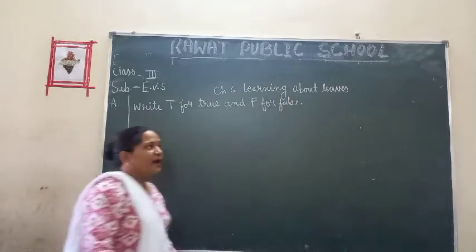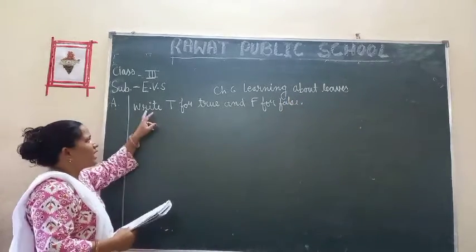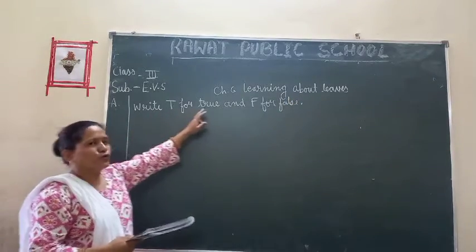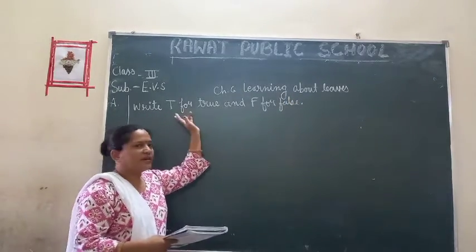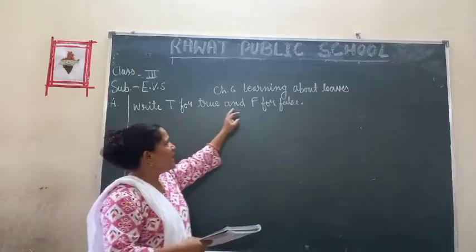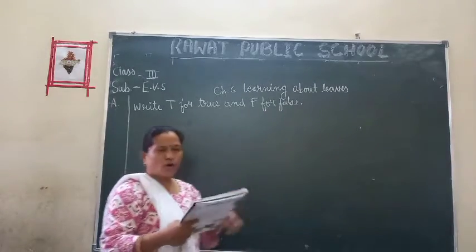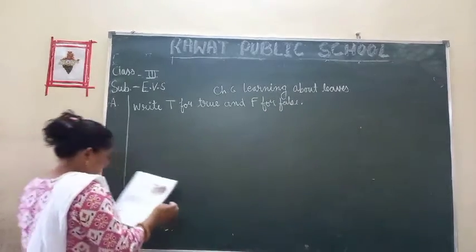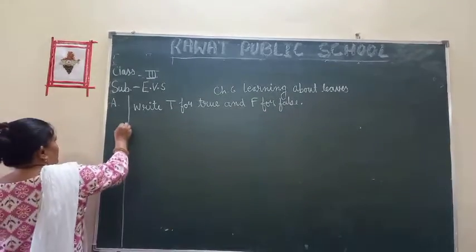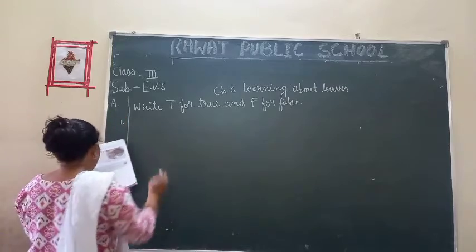We are heading over here. Write T for True, mark it. And F for False, mark it again. Now first is number 1.